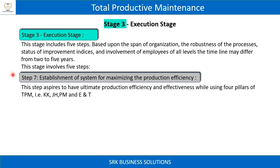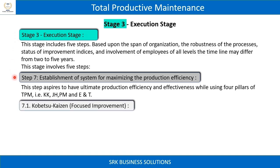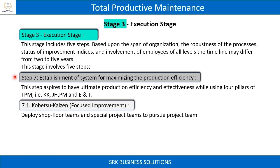Step 7: Establishment of a system for maximizing production efficiency. This step aspires to achieve ultimate production efficiency and effectiveness, using four pillars of TPM: KK, JH, PM, and E&T.